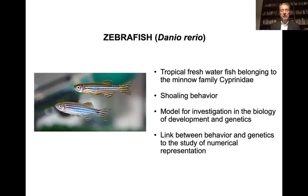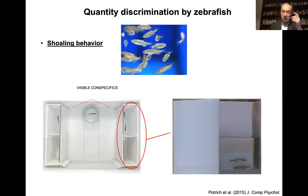So let's first of all see some behavioral evidence that zebrafish can show quantity discrimination. For instance, we use a task based on shoaling behavior in which a fish is tested with groups of conspecifics visible on one side and the other side behind transparent partitions.